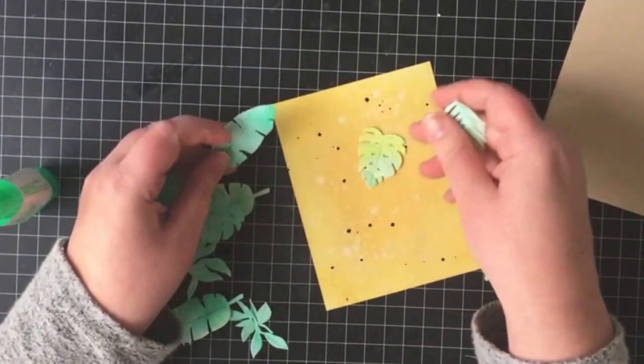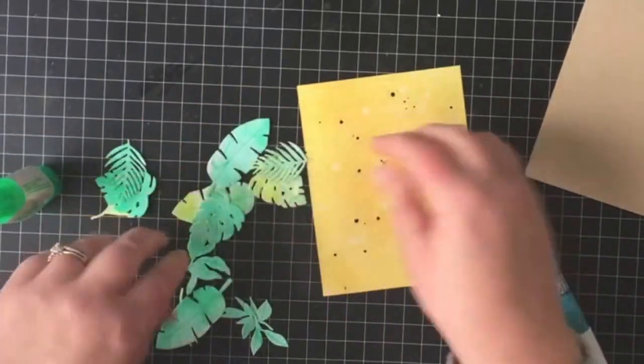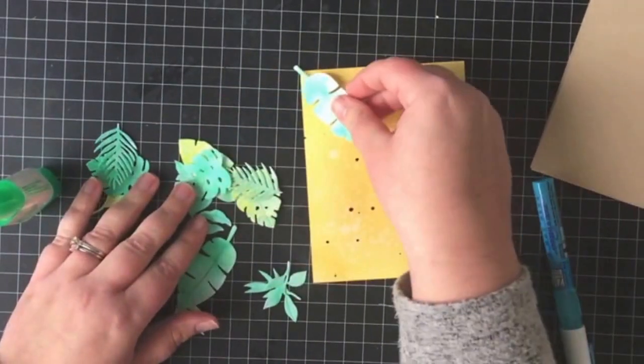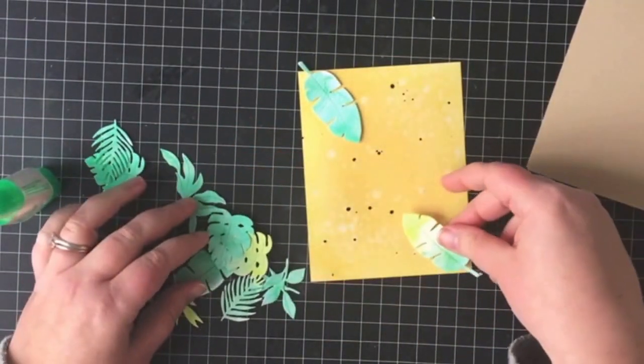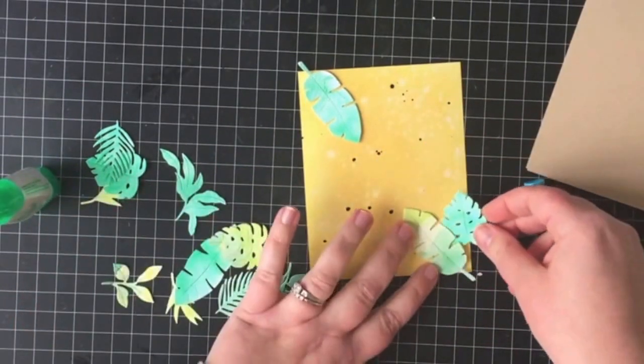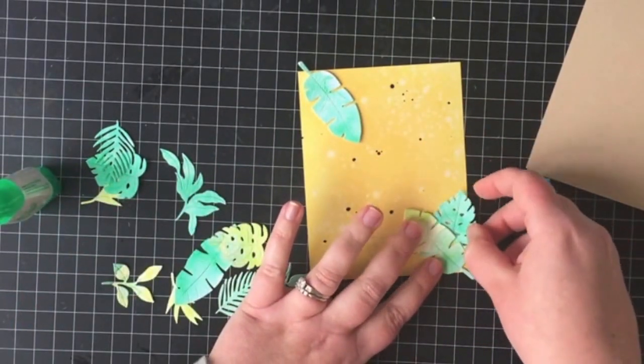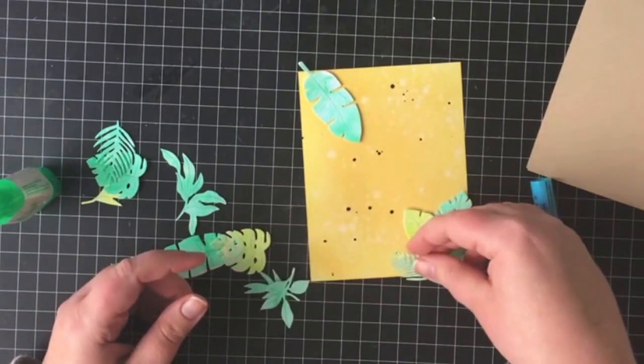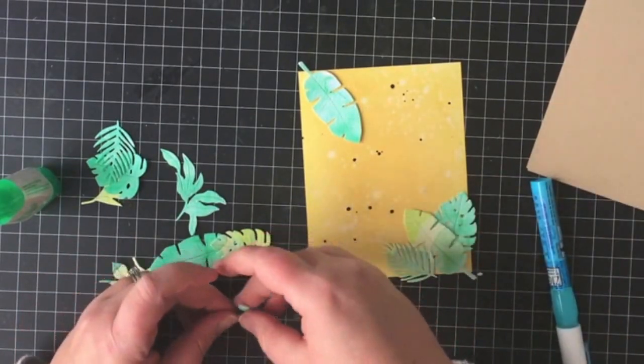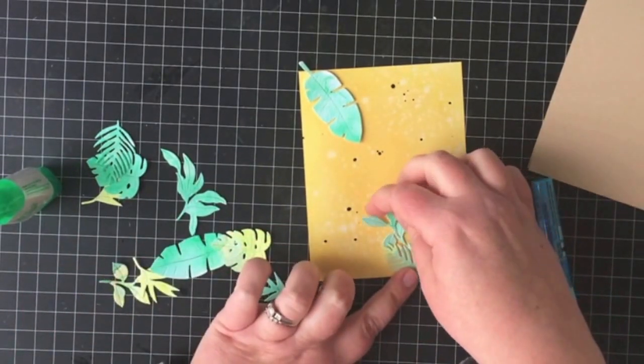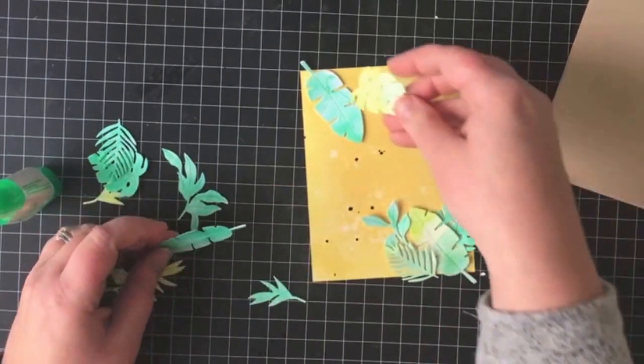I'm also just going in with a little bit of spray ink, this is by Dylusions, it's their black ink, and I just spattered a little bit on there and I do hit it with a heat gun pretty well before I add my leaves because I just want to make sure that that spray ink in particular has an opportunity to dry before I start layering things on top of it.